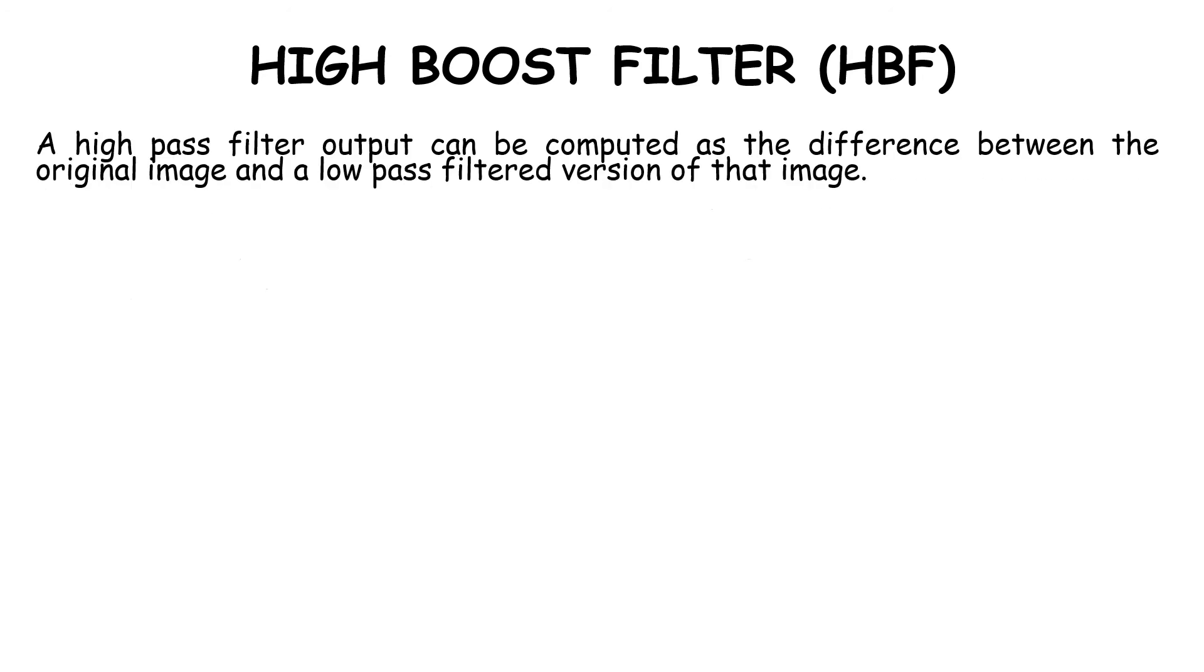The next filter is the high boost filter. A high pass filter's output can be computed as the difference between the original image and a low pass filtered version: High pass = Original - Low pass.